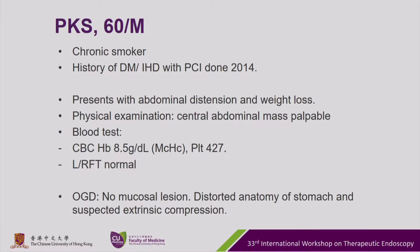Our next patient is a 60-year-old gentleman who is a chronic smoker with underlying diabetes and ischemic heart disease, and a PCI performed in 2014. He presented with abdominal distension and weight loss, and on examination showed a central abdominal mass. Blood review revealed a microcytic hypochromic anemia with hemoglobin down to 8.5.